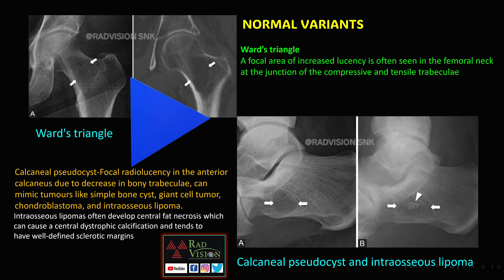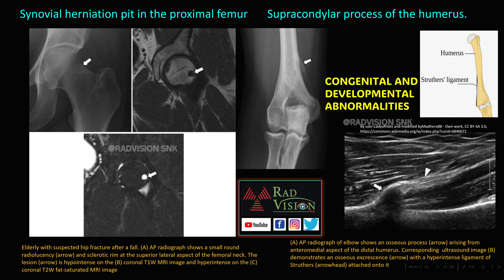There are also anatomical variants and congenital or developmental abnormalities. Here you can see a lucent area with sclerotic rim in the superolateral aspect of the femoral neck, hyperintense on T1 and T2 and fat-suppressed images — this is called a synovial herniation pit in the proximal femur. Also there is an osseous process arising from the anteromedial aspect of the distal humerus; on ultrasound, there is the hyperintense ligament of Struthers attached to it — this is the supracondylar process of the humerus. The Struthers ligament attaches from the supracondylar process to the medial humeral epicondyle. These should not be confused with tumors.